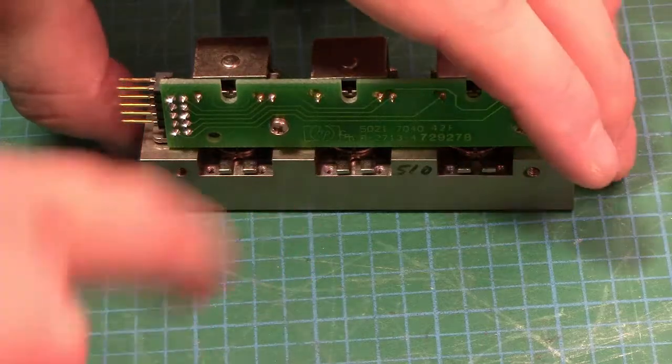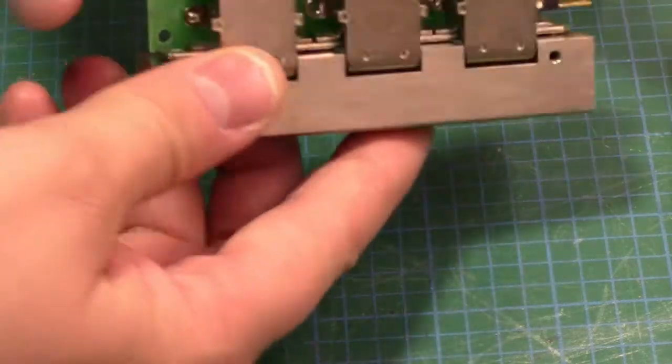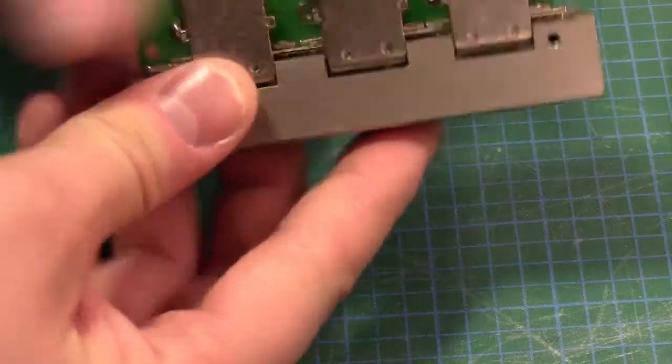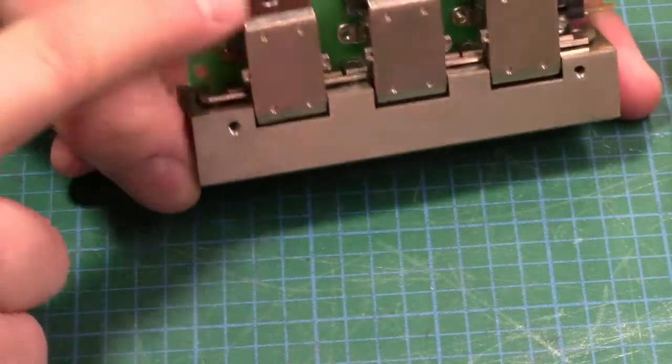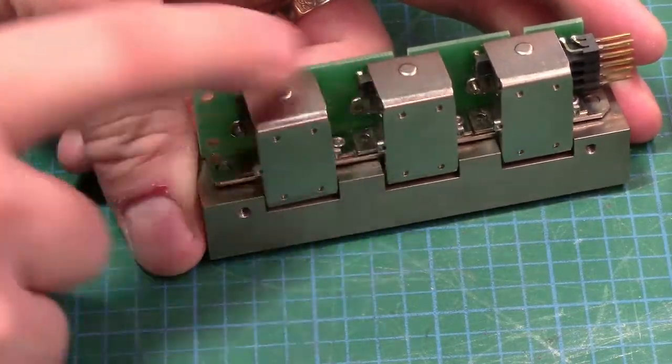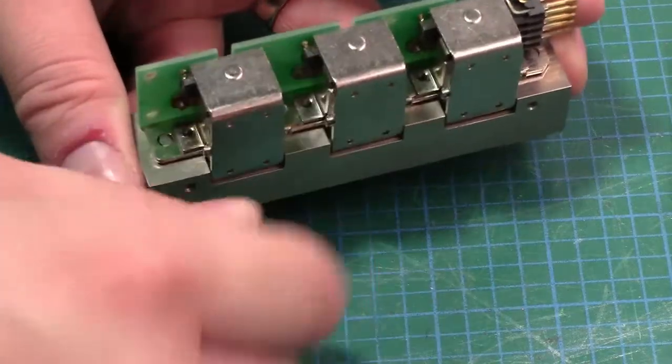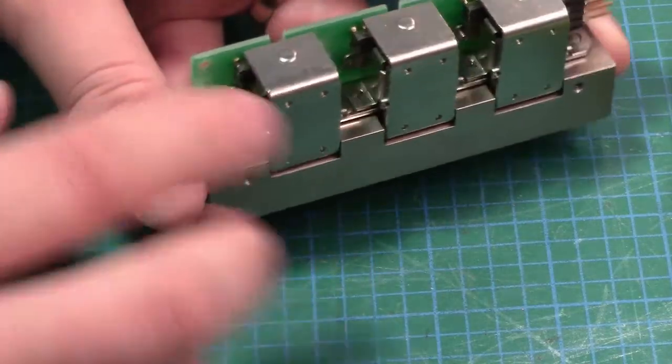After we remove all the screws and everything here, these two modules will come apart. Just be careful. There's a shield right here that can completely come out. It's held in by a set of magnets on each one of these relays, but just remember it can come out so it may reposition itself.